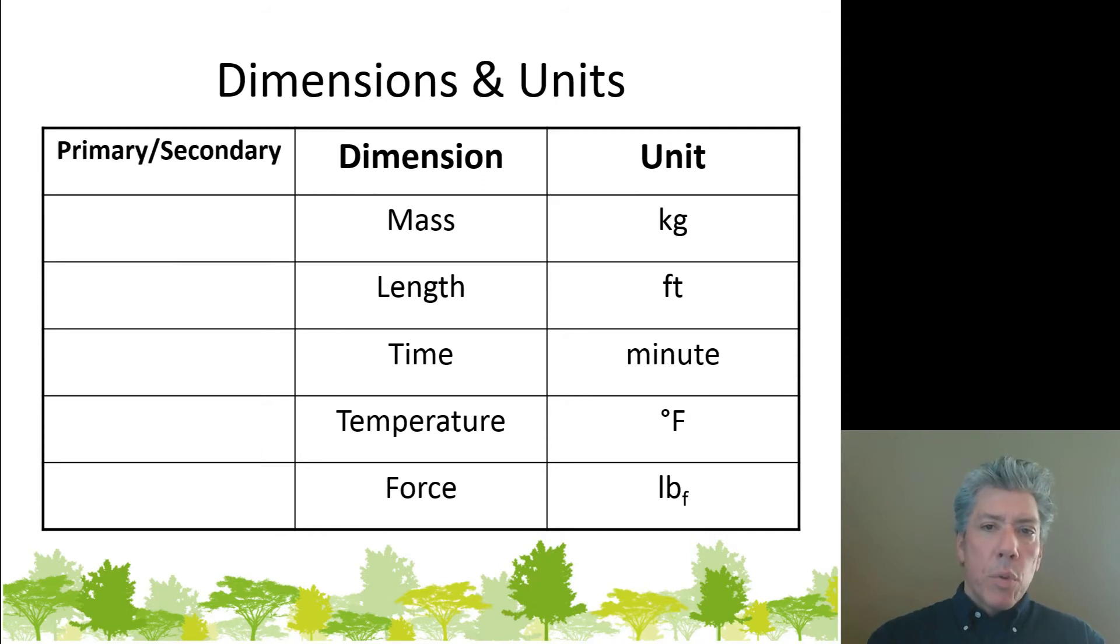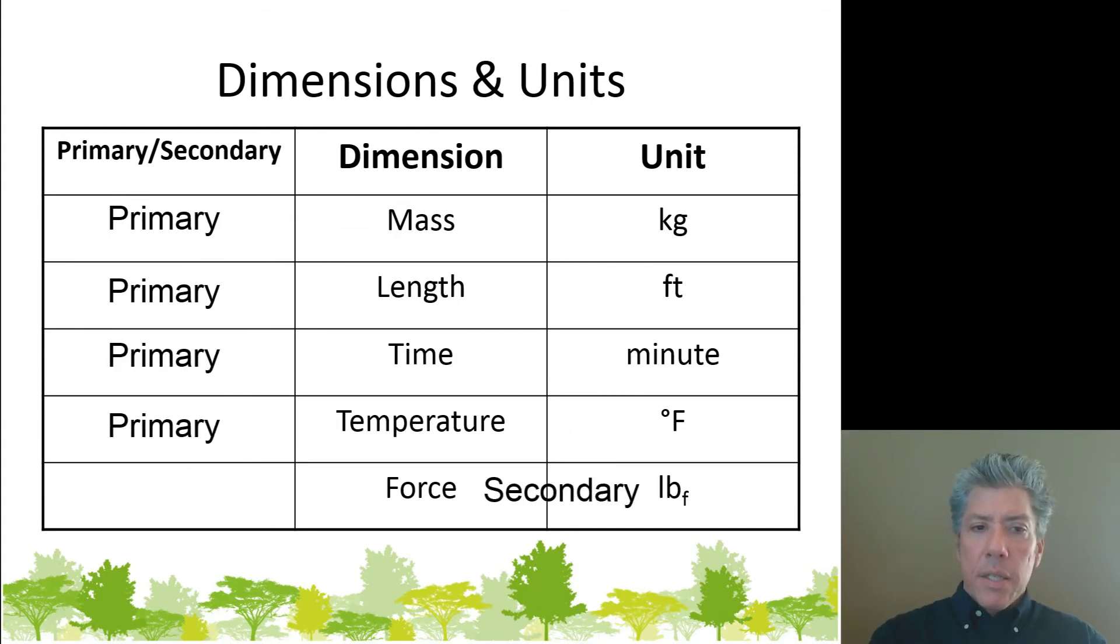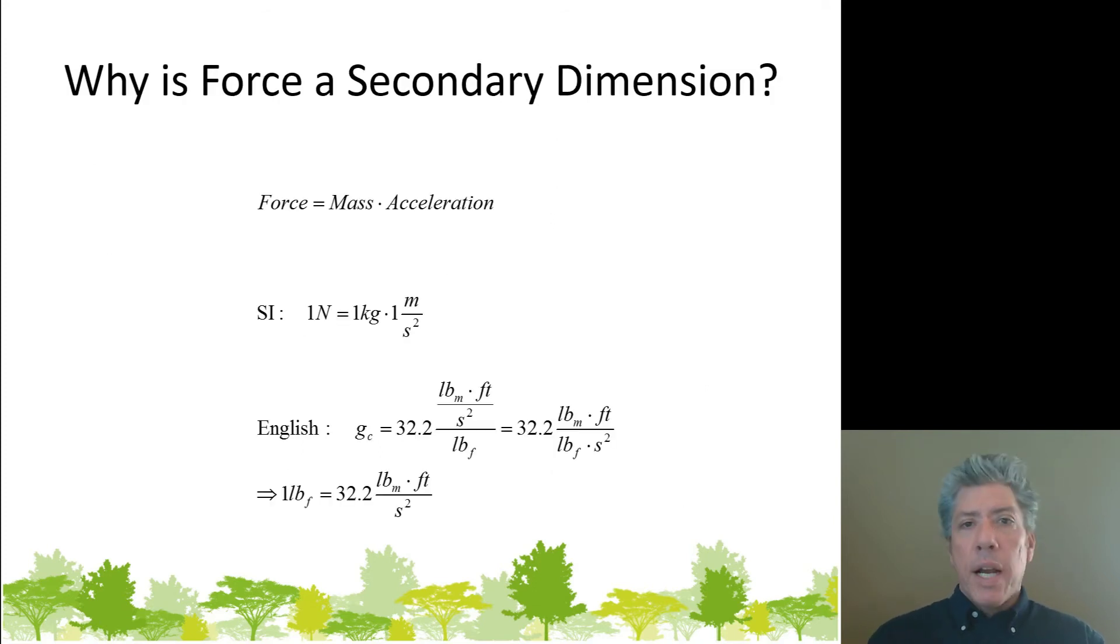Now, we can differentiate between different types of dimensions and units, primarily dimensions, based on whether they are so-called primary dimensions or secondary dimensions. And so primary dimensions are dimensions that can't be expressed in other dimensions more simply. So, for example, mass is a primary dimension. Length, time, temperature, these are all primary. But force is actually a secondary dimension. Force can be expressed in other units besides pounds force, for example. And this shouldn't be all that much of a surprise to you.